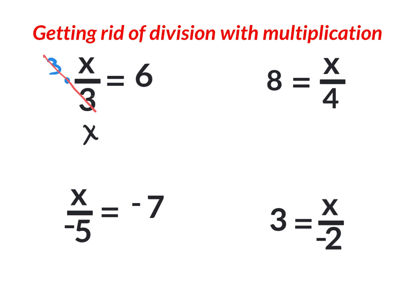The equal sign comes down, and what you did to one side you must do to the other — you multiplied by three, so multiply by three on the right side as well. Six times three is eighteen. Now x is by itself: x equals eighteen. That makes total sense because eighteen divided by three equals six.